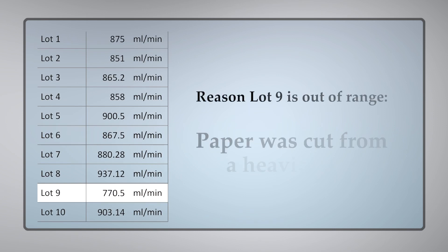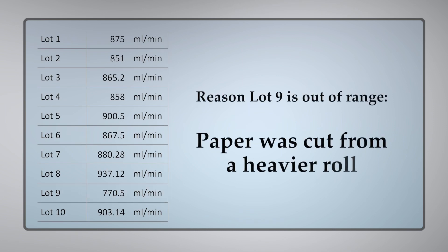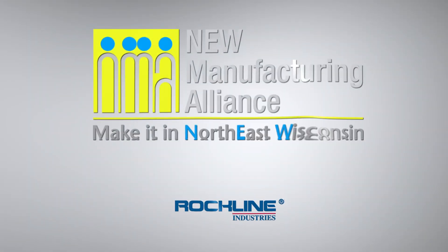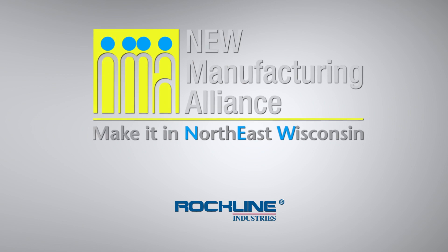An investigation revealed the paper was cut from a heavier roll. This paper is used in an entirely different brand. It turns out it was mislabeled by the forklift driver. Our graph revealed a mistake made two weeks ago in the warehouse.